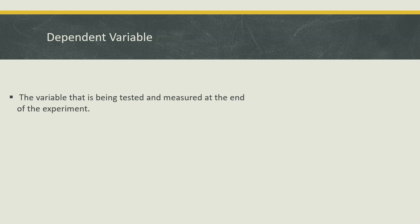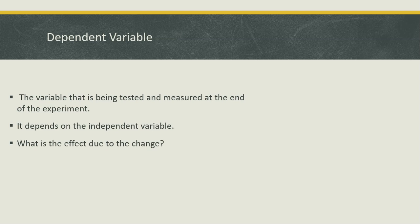Let's talk about the dependent variable. This is a variable that is being tested and measured at the end of the experiment. A way to think about this is it depends on the independent variable. The question you can ask yourself when looking at an experiment is: what is the effect due to the change?